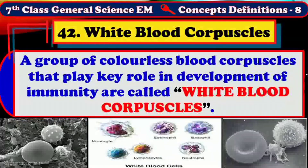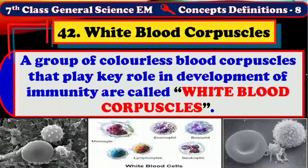Gabriel Andral and William Addison were the two doctors who observed white blood corpuscles for the first time. In healthy adult human beings, around 5,000 to 9,000 WBC are present in 1 cubic centimeter of blood.